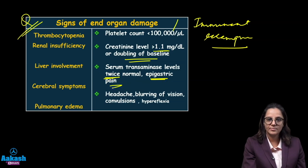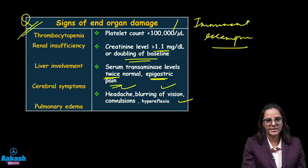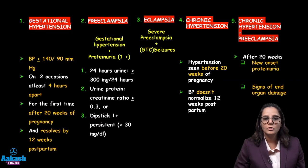Cerebral symptoms include headache, blurring of vision, convulsions, hyperreflexia, and pulmonary edema. These are all signs of imminent eclampsia and end-organ damage.